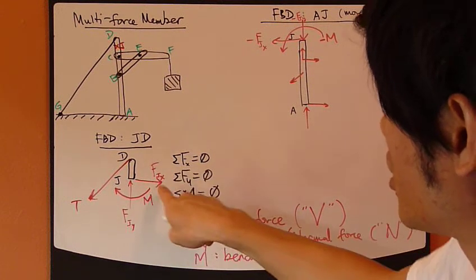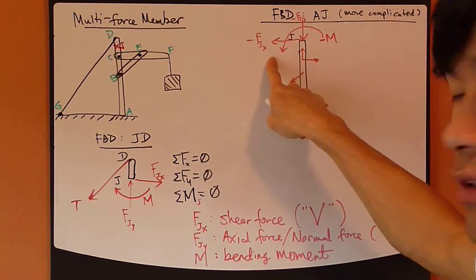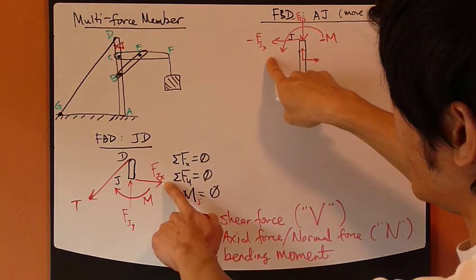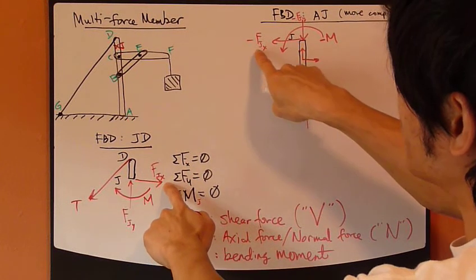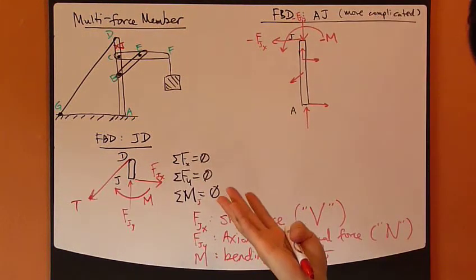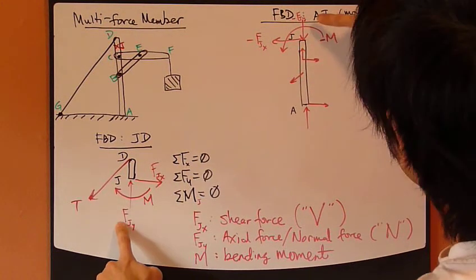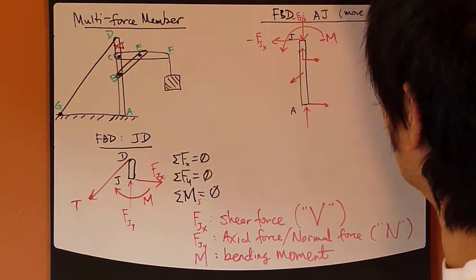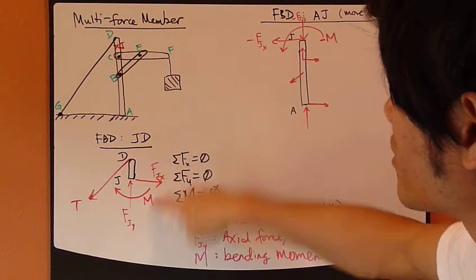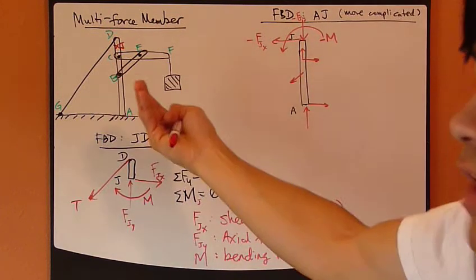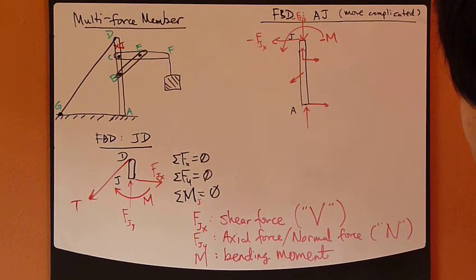FJX here goes to right. Here, FJX must go to left. Just so that in the end, when you combine these two, this FJX and negative FJX will cancel out. Newton's third law. Boom. FJY here going up, this FJY goes down. Bending moment go clockwise direction. This other bending moment goes counterclockwise.